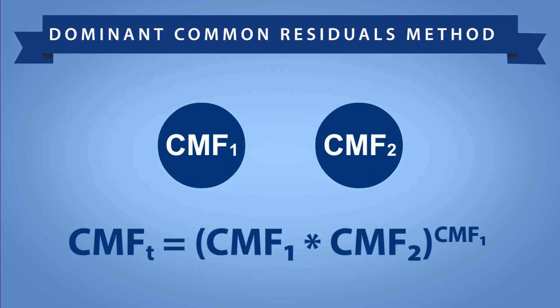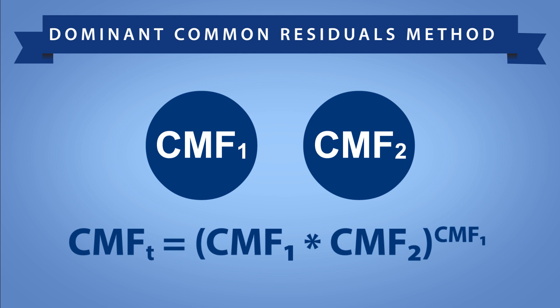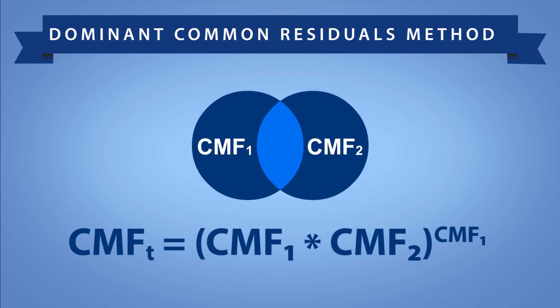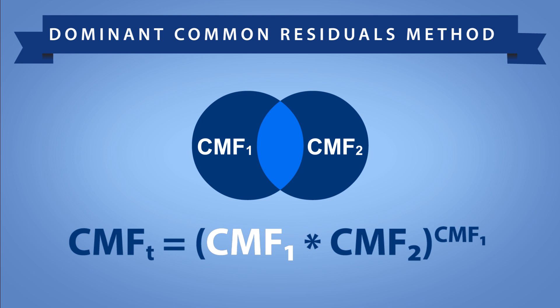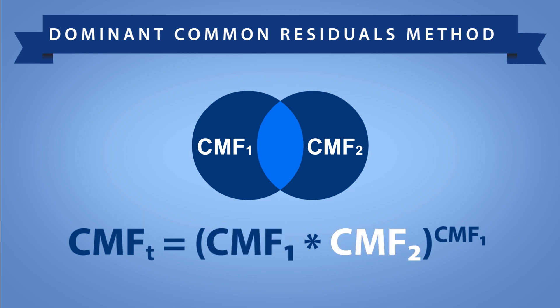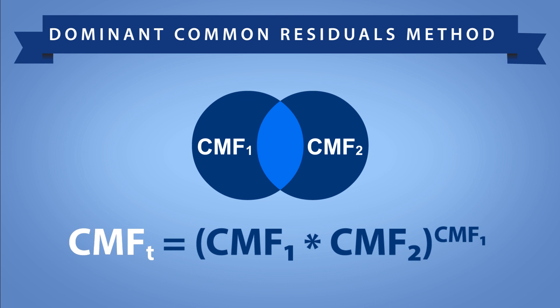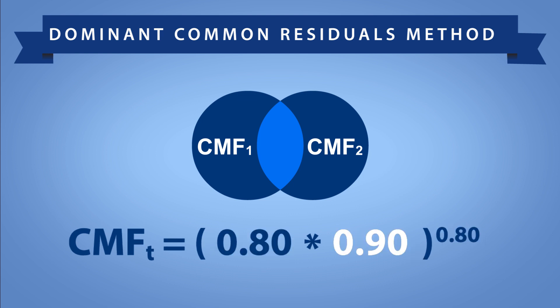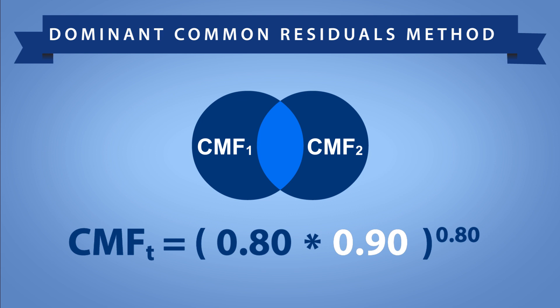The dominant common residuals method considers the effect of both countermeasures but reduces the effectiveness of the second countermeasure. This method is appropriate for scenarios where there is some overlap expected among the countermeasure effects. It is similar to the multiplicative method, except the result is raised to the power of the smallest CMF, providing a more conservative estimate. CMF1 is the smallest CMF value, CMF2 is the second smallest, and CMFt represents the combined effect. For example, if CMF1 is 0.80 and CMF2 is 0.90, then CMFt is 0.77.